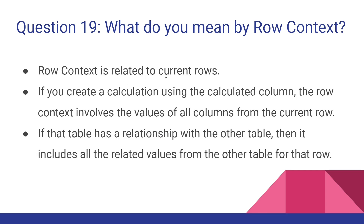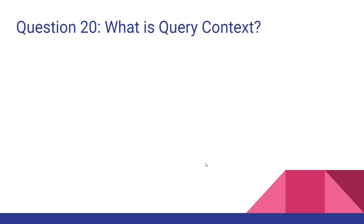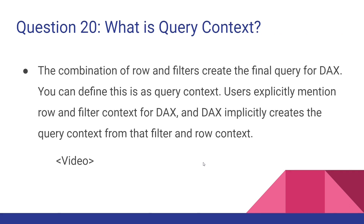What do you mean by row context? Row context is related to the current row. If you create a calculation using a calculated column, the row context involves values of all columns from the current row. If that table has a relationship with another table, it includes all the related values from the other table for that row. What is query context? The combination of row and filter contexts creates the final query for DAX. Users explicitly mention row and filter context, and DAX implicitly creates the query context from that.